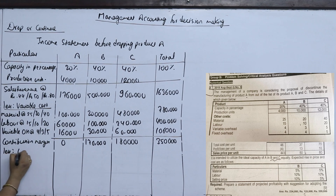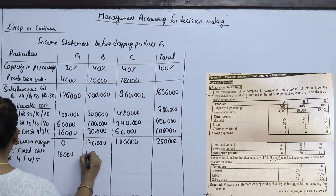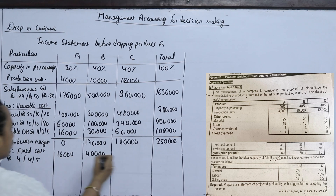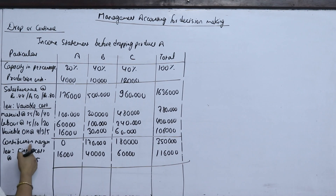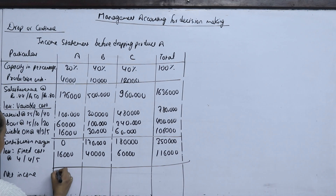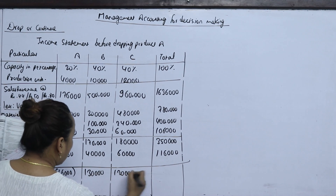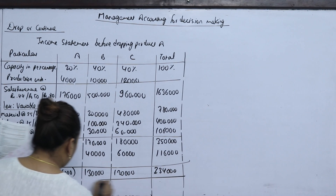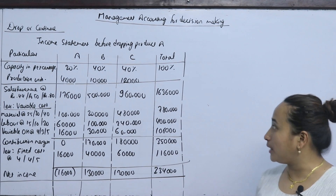We have fixed cost. The fixed cost rate is 4,4,5, and the fixed cost is on the same basis. So 4 into 4,000 is 16,000; 10,000 into 4 is 40,000; 12,000 into 5 is 60,000. Contribution margin minus fixed cost gives net income. The total net income is 2,34,000 — total profit is 2,34,000. So product A is showing a loss — loss means it is a candidate to drop.